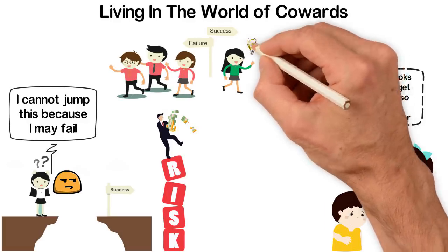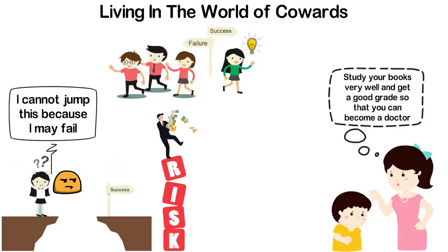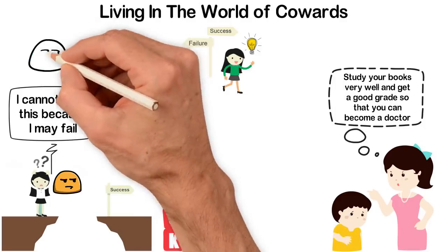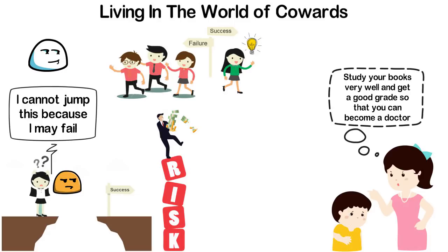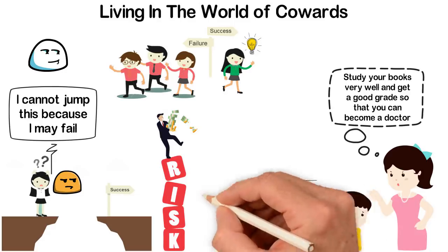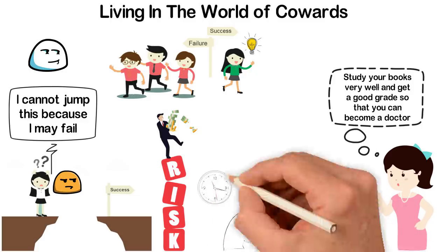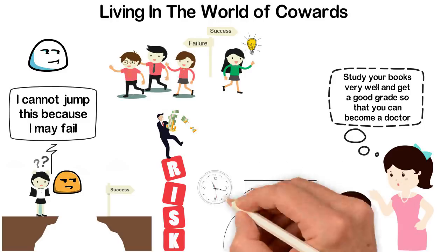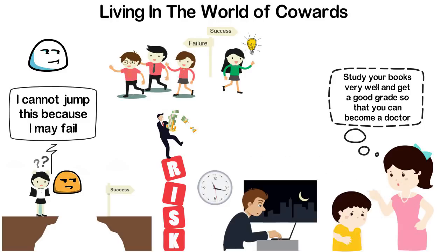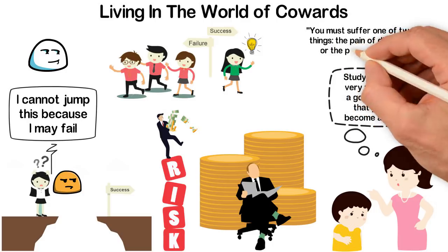Plan B means that even if you want to be an entrepreneur, go get a degree first so that if you fail in business, you can easily get a job. The problem about this way of thinking is that plan B will always distract you from plan A. I left school without any degree because I didn't want to be employable. I knew if I was employable, I could easily stop pursuing my entrepreneurial dream whenever the road becomes rough. But because I had no degree, I knew that I didn't have plan B. Because I didn't have plan B, I fought with my last blood and I won. You must suffer one of two things, the pain of discipline or the pain of regret.